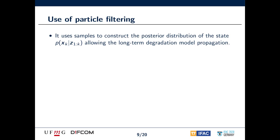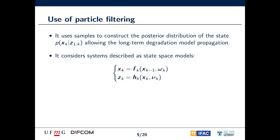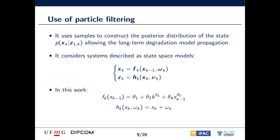Here we use a particle filter to carry the system states in a long-term prediction, allowing us to estimate the uncertainty in such predictions. The particle filter uses a set of samples to estimate the posterior distribution of the system states. The general formulation of particle filters can take state-based models such as this one, where x is the system state, y are measurements, f is the state transition function, h is the measurement function, and w and v are process and measurement noises. In this work, we use the proposed degradation model as a transition function. We also assume the model states can be measured with some noise.